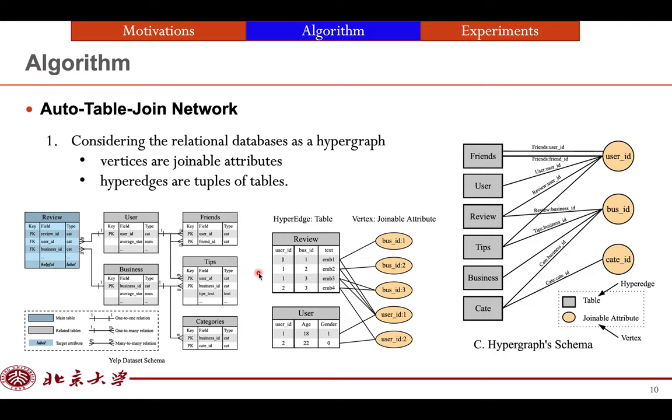Assume that we only have two tables, the review table and the user table. There are four tuples in review table, one, two, three, four, and there are two tuples in the user table, one, two. So there are two kinds of joinable attributes, business ID from 1 to 3, and user ID from 1 to 2. The joinable attributes constitute the vertices of the hypergraph, and its hyperedges connect multiple vertices. Note that the hyperedges connect with more than one vertex. That's why we call it hyperedges instead of normal edges.